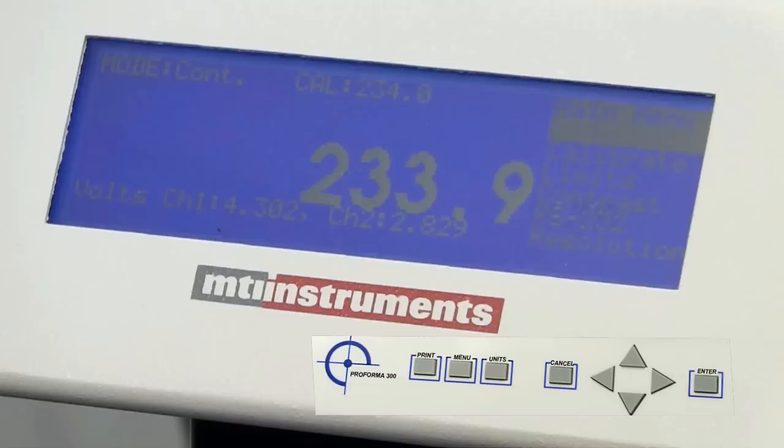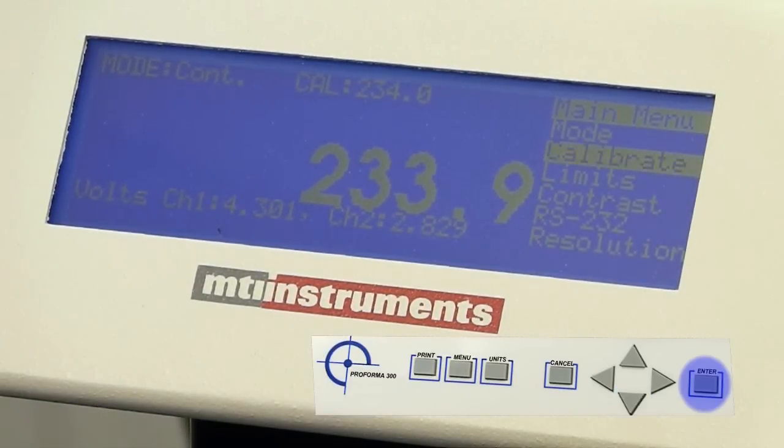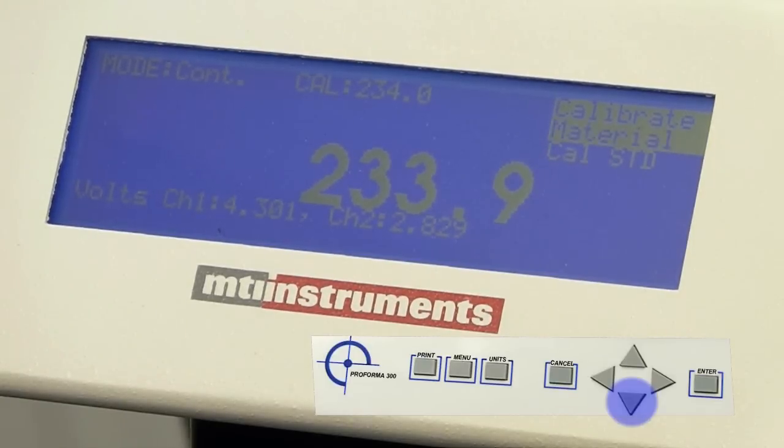Now we're going to use the keyboard to actually put 254.0 microns in as a calibration standard. The first step, we hit the menu button. We use the down arrow and go to calibrate. We hit enter. We use the down arrow again to read cal standard. We hit enter again. Now what we're going to do is make the display read 254.0.